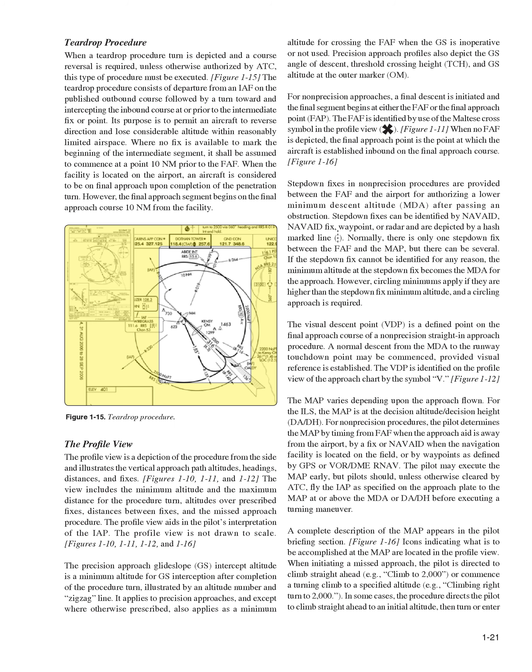Teardrop procedure: when a teardrop procedure turn is depicted and a course reversal is required, unless otherwise authorized by ATC, this type of procedure must be executed. The teardrop procedure consists of departure from an IAF on the published outbound course followed by a turn toward and intercepting the inbound course at or prior to the intermediate fix or point. Its purpose is to permit an aircraft to reverse direction and lose considerable altitude within reasonably limited airspace. Where no fix is available to mark the beginning of the intermediate segment, it shall be assumed to commence at a point 10 nautical miles prior to the FAF. When the facility is located on the airport, an aircraft is considered to be on final approach upon completion of the penetration turn. However, the final approach segment begins on the final approach course 10 nautical miles from the facility.